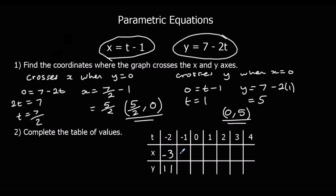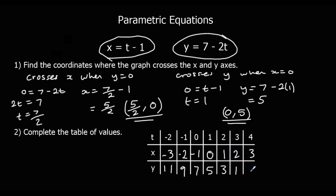We can substitute all the t values in: if we put negative 1 in we get negative 1 minus 1 and 7 minus 2 times negative 1, so 7 plus 2. We keep going for t equals 0, 1, and 2 to get all our coordinates. It's a straight line graph, so we can see a pattern. To plot it we ignore the t values and just plot our x and y coordinates.